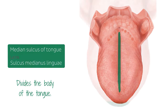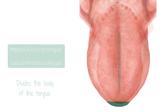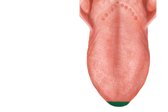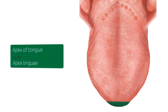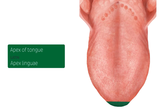The next highlight is the apex of the tongue — a term simply describing the anterior-most portion of the tongue, or in other words, the tip of your tongue.